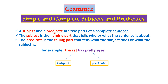A subject and a predicate are two parts of a complete sentence. As we learned, a complete sentence must have two parts in order to be complete. What are these parts? Subject and predicate. The subject is the naming part that tells who or what the sentence is about. The predicate is the telling part that tells what the subject does or what the subject is.